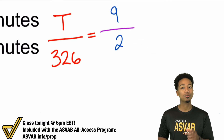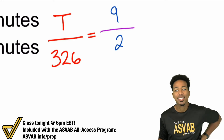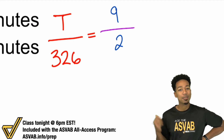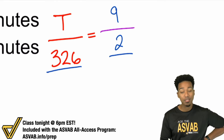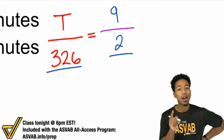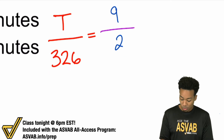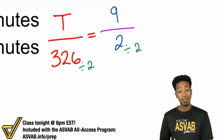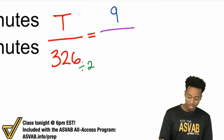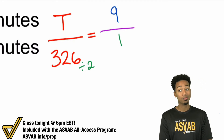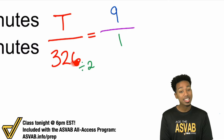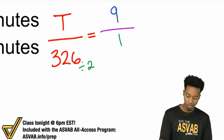Here's a little secret about proportions: when you have a fraction equaling a fraction, whatever you do to one side you do to the other. I notice both denominators are even, so I can divide both denominators by 2. Dividing the denominator 2 by 2 gives 1, and 326 divided by 2 is 163 — because 320 divided by 2 is 160, and 6 divided by 2 is 3, giving 163.